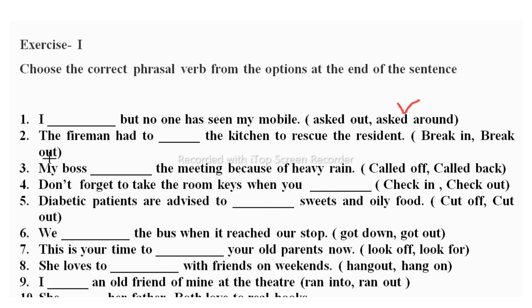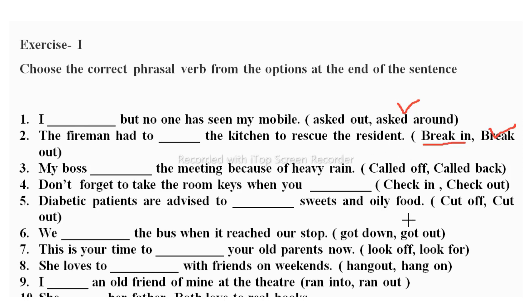Second sentence: 'The fireman had to dash the kitchen to rescue the resident.' Options are 'break in' or 'break out.' 'Break in' means something is broken into two pieces, while 'break out' means to enter an area with force. The correct answer is 'break out' — the fireman had to break out into the kitchen.